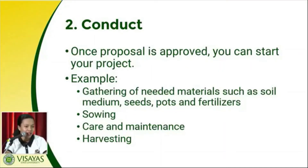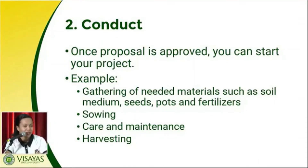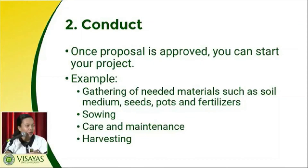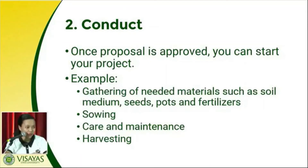After all the care and maintenance and management practices, you can proceed to harvesting. This is the final output of your project. To ensure food security, you need to have a harvest — to be used and consumed by your family, extended families, and neighbors.